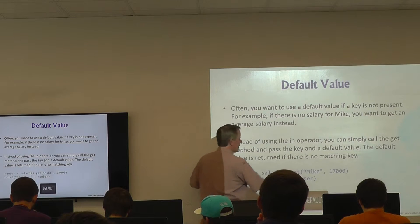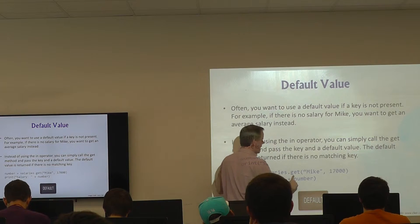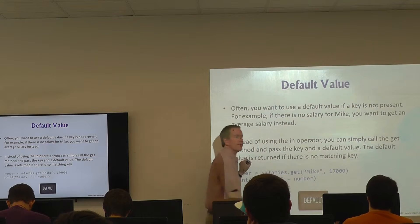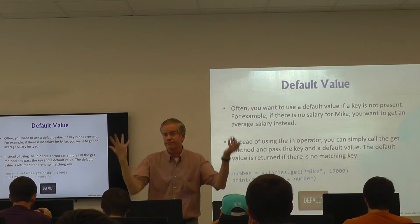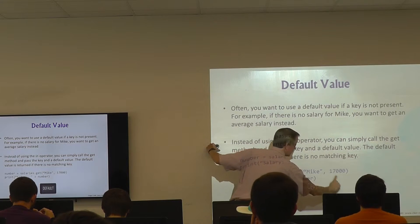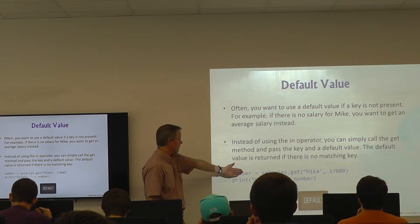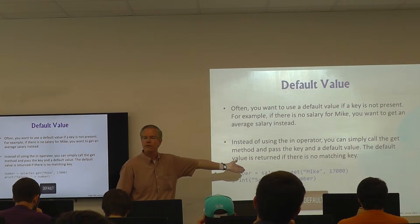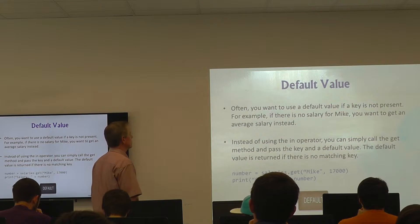You can use a default value with the `.get()` method. For example: `number = salaries.get('Mike', 17000)`. If Mike's salary is not in the dictionary, the default value — 17,000 — is what will be returned. So if you need a number whether or not the key is in the dictionary, you can use default values to get something back.